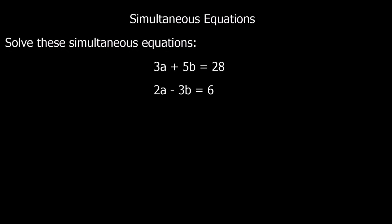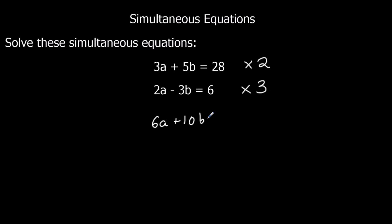This time nothing is the same — we don't have the a's the same or the b's the same. When we get questions like this we have to make them the same. We can either make the a's the same or make the b's the same. To make the a's the same I'm going to have to times this equation by 2 and this equation by 3. If I double the whole equation this would be 6a, and if I times this one by 3 this will be 6a. So let's double this equation: that's 6a plus 10b equals 56. And times this one by 3: 6a minus 9b equals 18. So now I've got the a's the same.